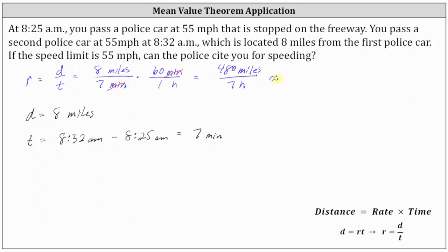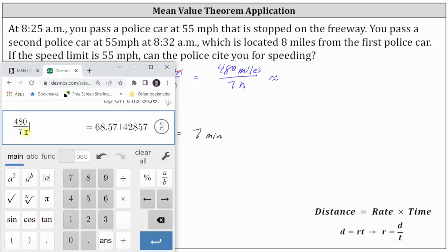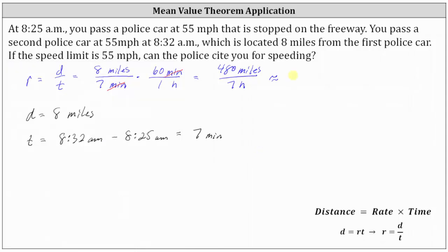And now we'll convert to a decimal and round to one decimal place. But notice how here the units are miles per hour. 480 divided by seven is approximately 68.6, giving us 68.6 miles per hour as your average rate or average speed from 8:25 a.m. to 8:32 a.m.